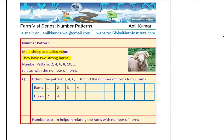If we count the number of horns, can we figure out how many sheep are there? Or if we count the number of sheep, do we figure out how many horns could be there? We are talking about the male sheep called Rams. So based on this, here is the very first question for you: extend the pattern two, four, six to find the number of horns for 11 Rams. Each Ram has two horns, so if there are 11 Rams, how many horns do you expect? You can complete this table and figure it out.